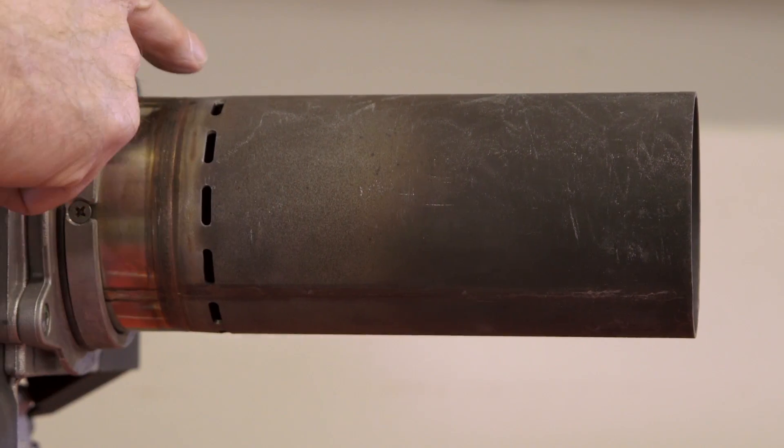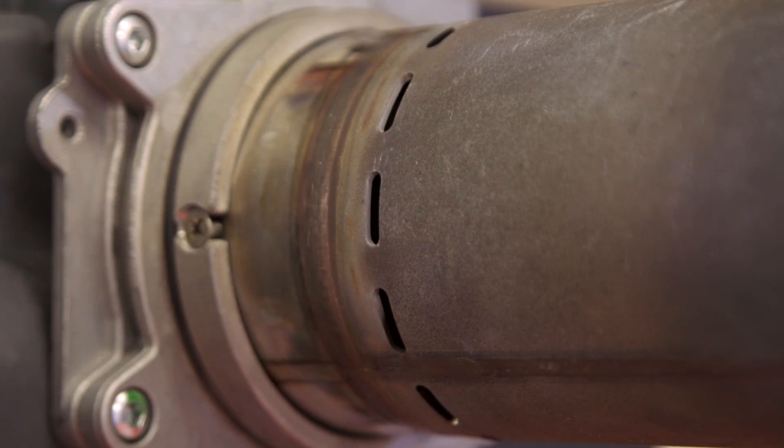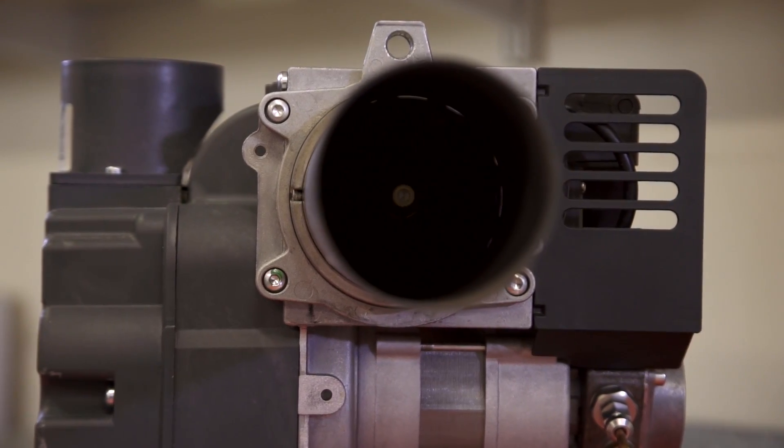The combustion head has slotted holes here. When the burner is firing, the combustion gases are recirculated through these holes, producing a cleaner blue flame with lower emissions.